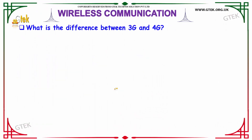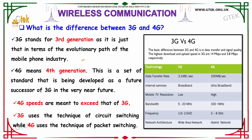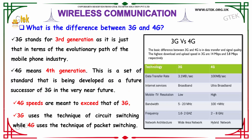What is the difference between 3G and 4G? 3G stands for third generation, reflecting its evolutionary path in the mobile phone industry. 4G means fourth generation — a set of standards developed as the future successor of 3G. The speed and bandwidth in 4G are higher than in 3G. 3G uses circuit switching, whereas 4G uses the faster technique of packet switching, which makes 4G faster.